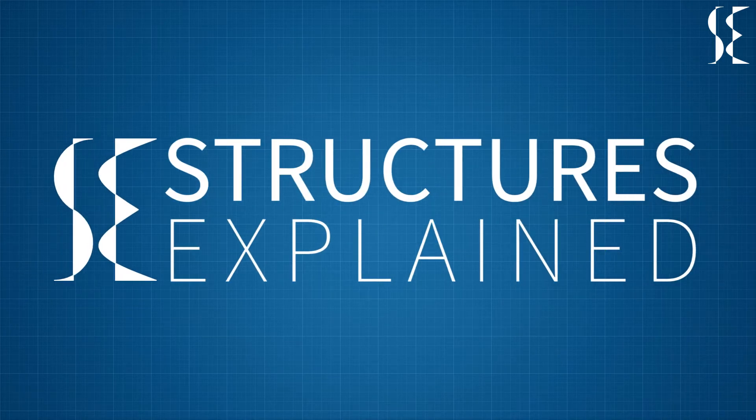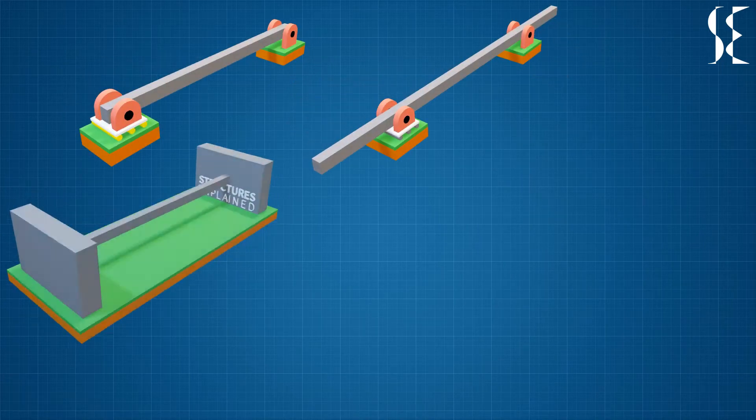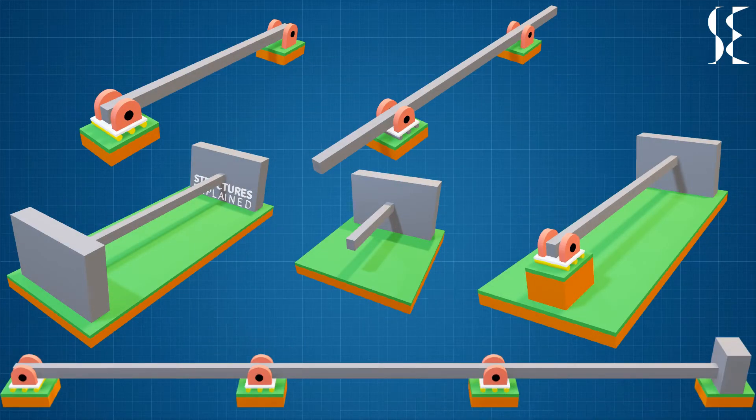Hi, this is Structures Explained and in this video we will be learning about various types of beams used in mechanics. There are basically 6 types of beams used in mechanics.